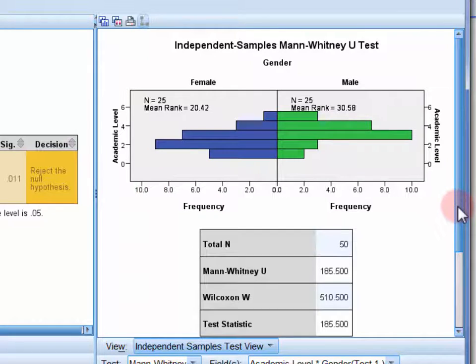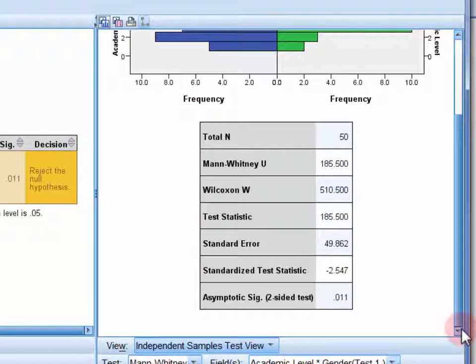Now in the table below the graph, we have the information that we need for the write-up. So most specifically, we've got the Mann-Whitney U value, which is 185.5. We've got the standardised test statistic of negative 2.547 and the significance level, which is .011.